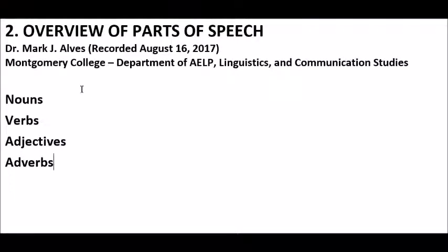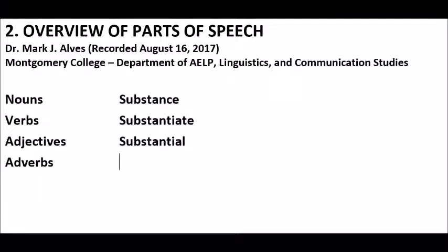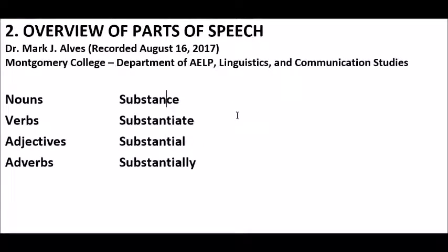An easy way to exemplify these is with a word family. A word family is a group of words related by their root word forms. Here's the noun 'substance,' the verb 'substantiate,' the adjective 'substantial,' and the adverb 'substantially.' You can see why I call it a word family — they all have 'substan' in them, but they differ because of the suffixes at the ends.